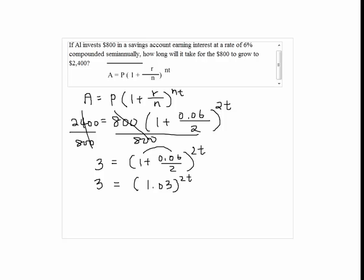By taking log on both sides we get log 3 equals 2T log 1.03. So finally you just have to divide both sides by 2 log 1.03 to isolate T.